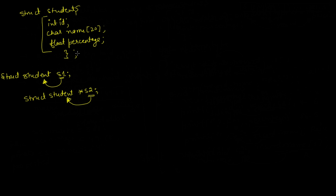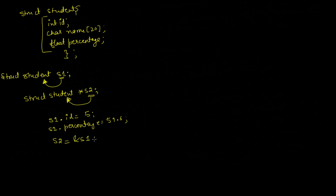So s1.id is equal to 5 and s1.percentage is equal to 59.6. Now in the s2 pointer we are storing the address of the s1 variable. From this s2 pointer we want to access the id part.